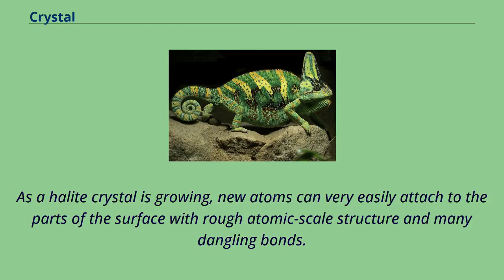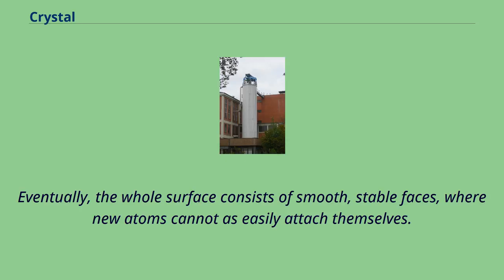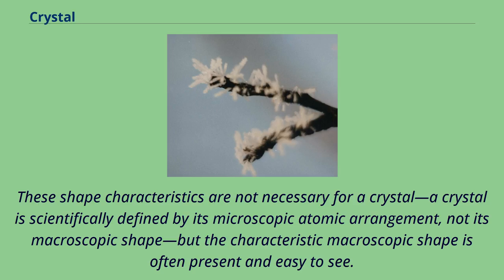As a halite crystal is growing, new atoms can very easily attach to the parts of the surface with rough atomic-scale structure and many dangling bonds. Therefore, these parts of the crystal grow out very quickly. Eventually, the whole surface consists of smooth, stable faces, where new atoms cannot as easily attach themselves. Crystals are commonly recognized by their shape, consisting of flat faces with sharp angles, though a crystal is scientifically defined by its microscopic atomic arrangement, not its macroscopic shape.